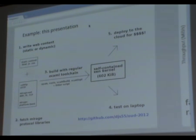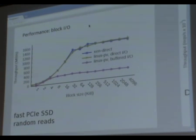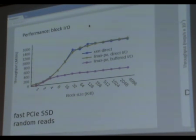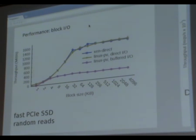The next thing I want to talk about is performance. I have a block benchmark using a very fast PCIe storage device. The graph shows random throughput - the top two lines show the Mirage case and the Linux case using DirectIO, and they're pretty much the same, both with high performance at about 1.4 gigabytes per second. Interestingly, I accidentally turned off DirectIO in another benchmark and performance dropped massively, showing how tricky it can be to get good performance out of the legacy stack because caches get in the way. With the Mirage stack we don't have that, so it's all nice and raw with good performance.